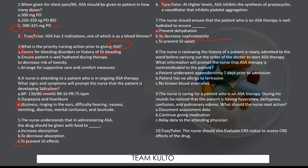Number eight: Before starting aspirin therapy, what information would indicate aspirin is contraindicated? The answer is a patient who underwent appendectomy seven days prior to admission — due to risk of bleeding. Number nine: A patient on aspirin therapy is found to have hyperpnea, tachypnea, confusion, and pulmonary edema. The nurse's next action should be to relay the data to the attending physician immediately, as these are acute signs of salicylate toxicity — do not just document.